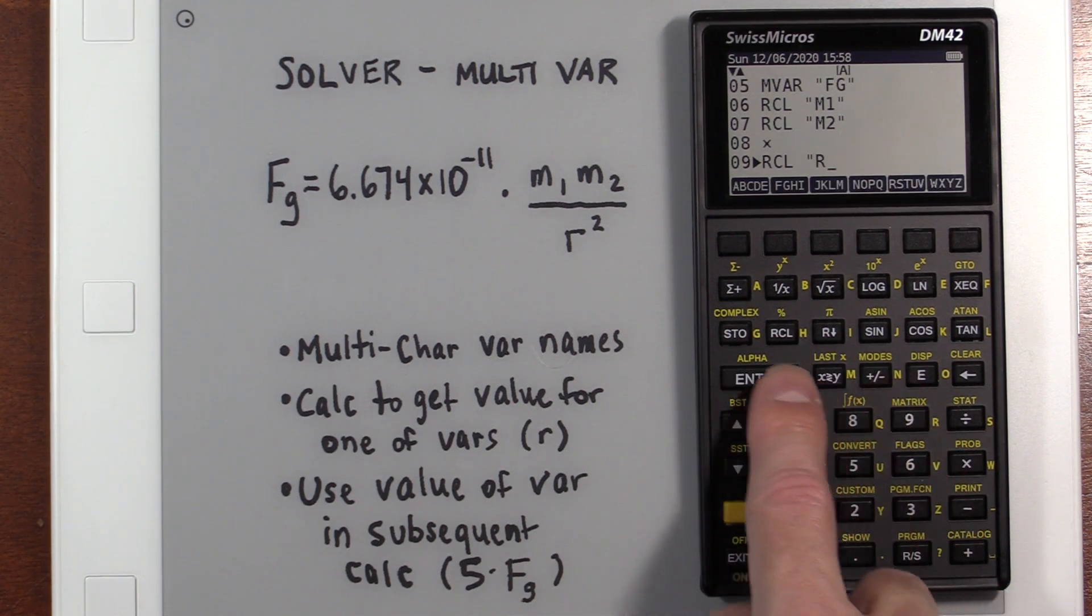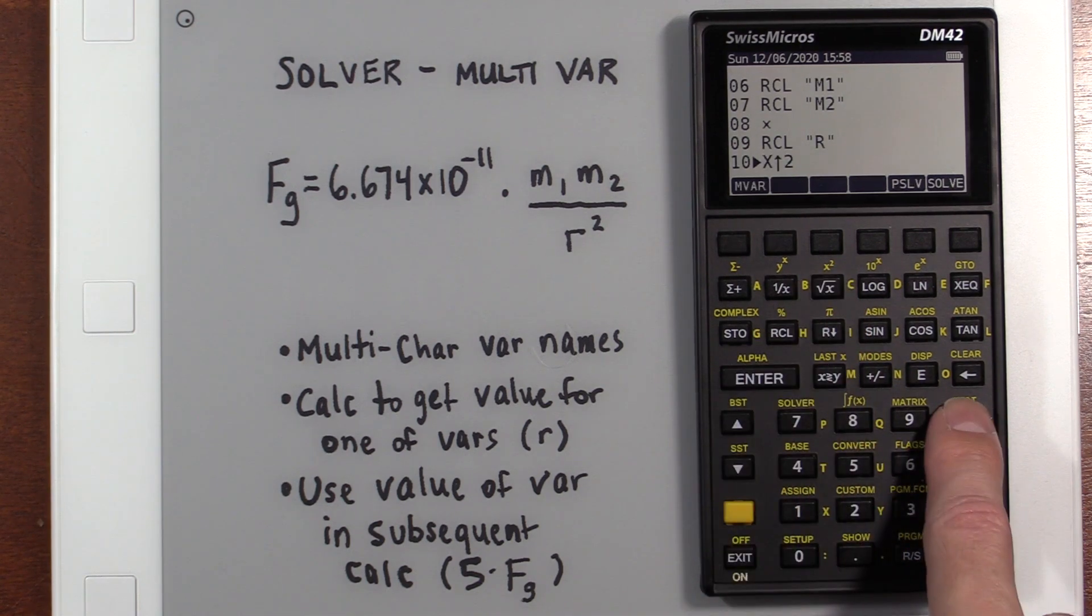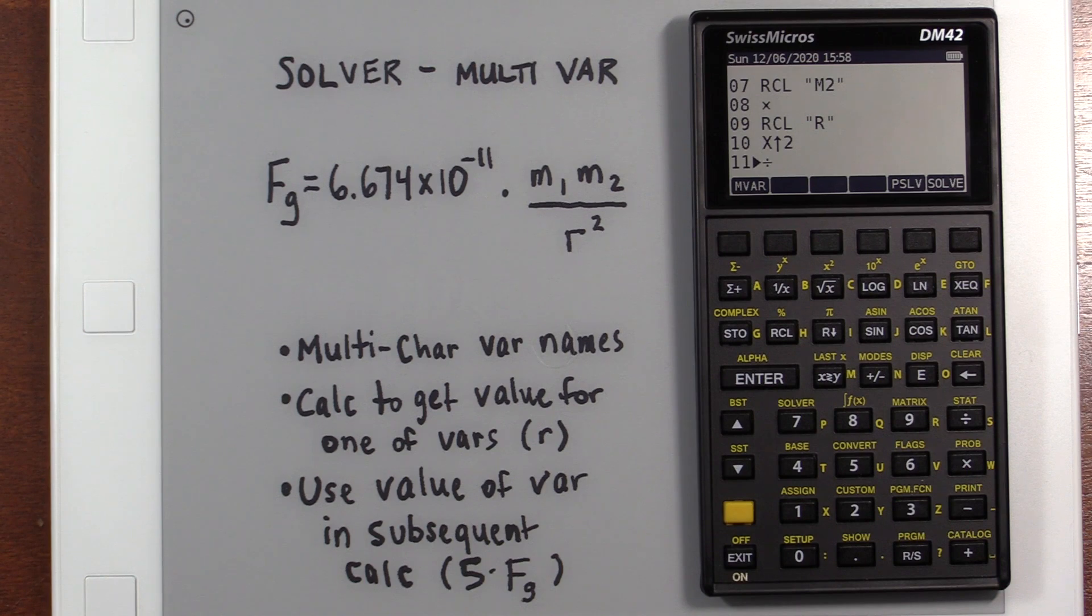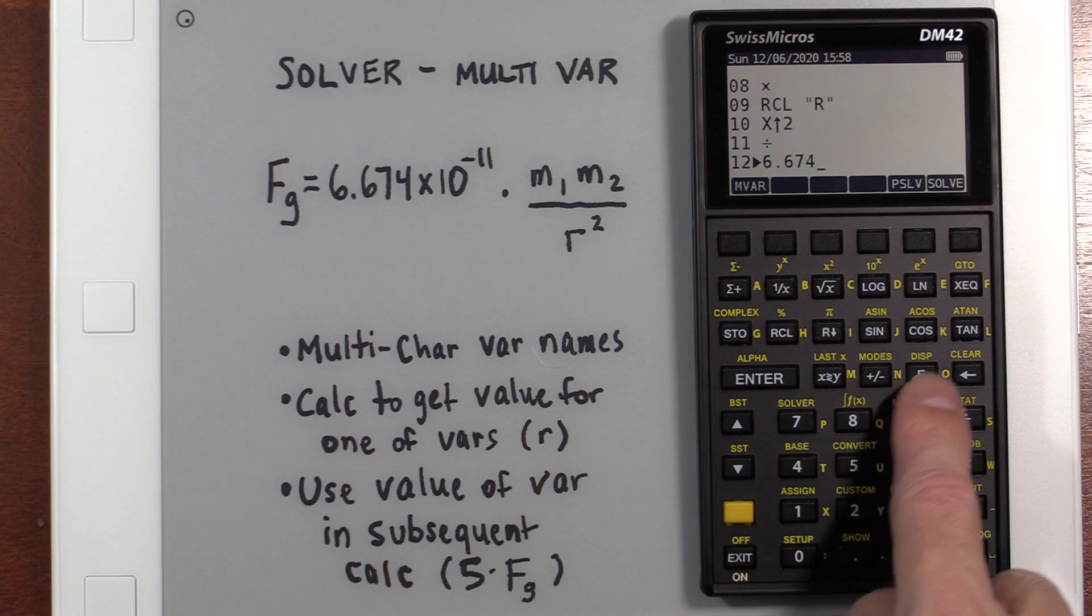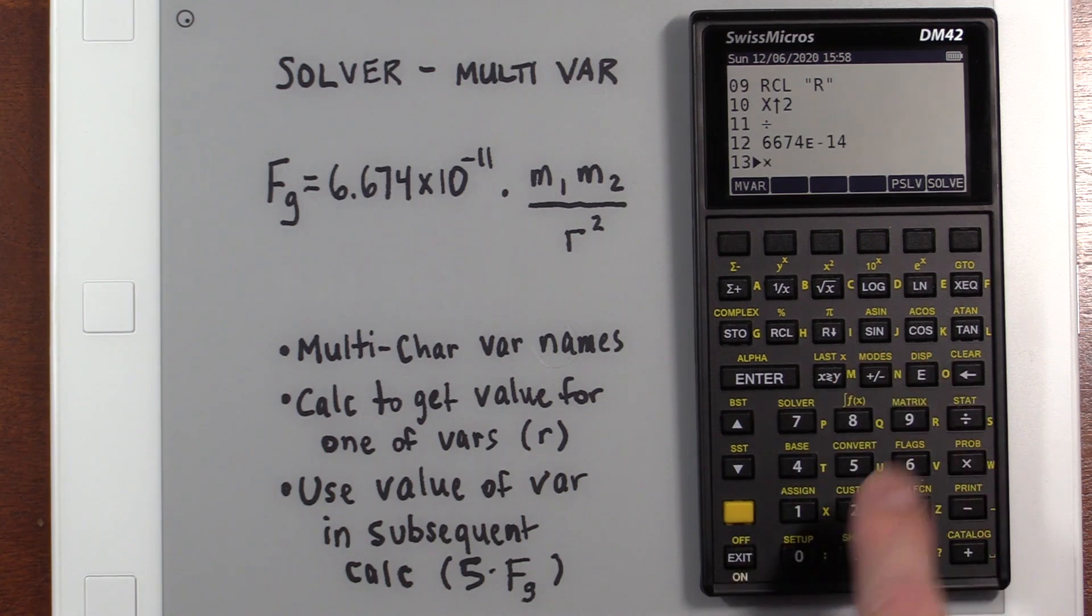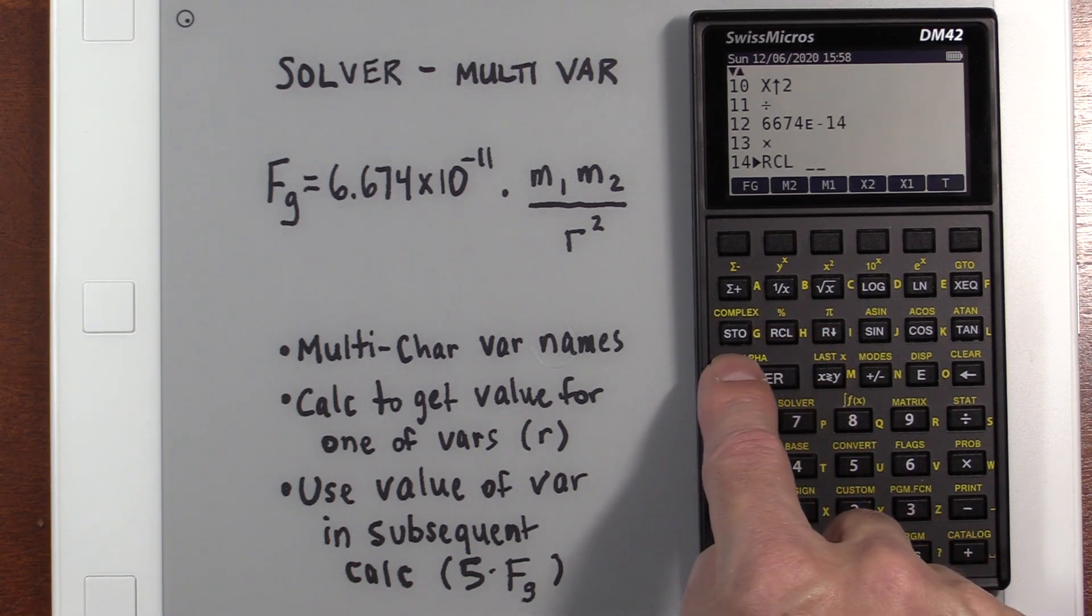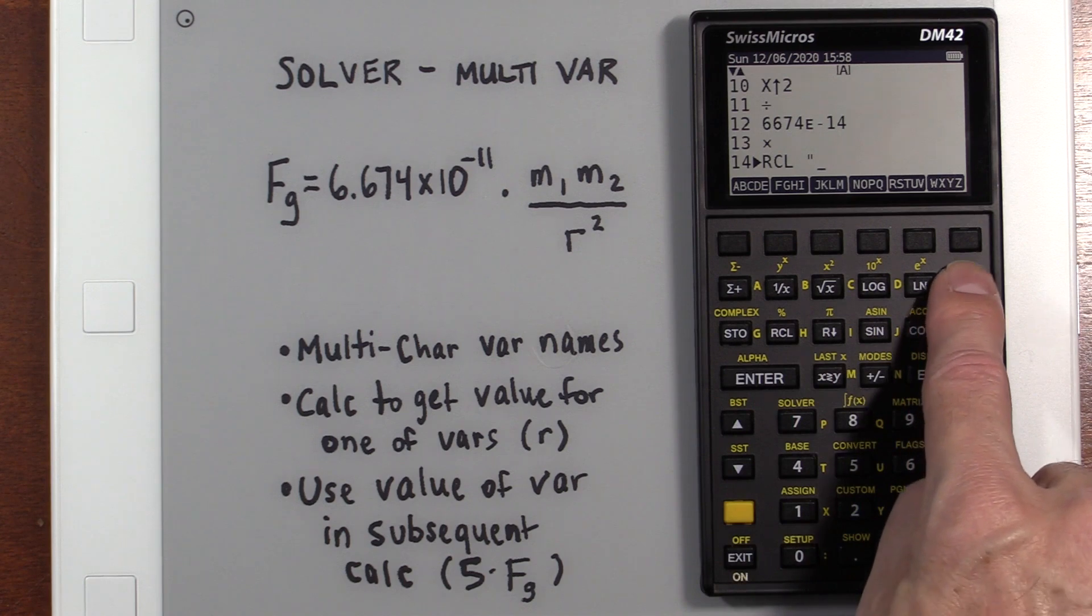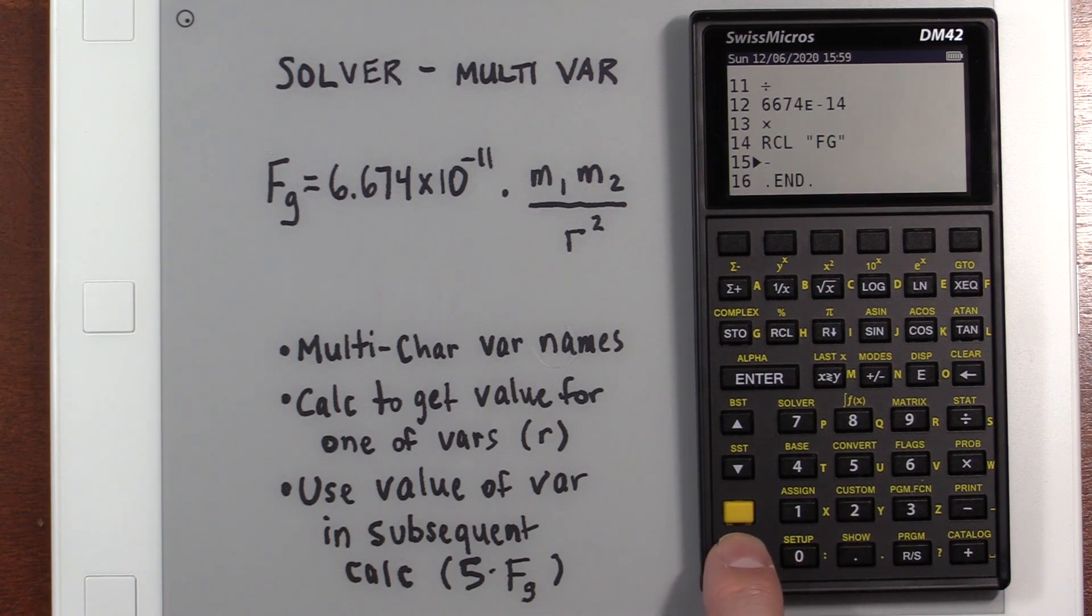And we're going to then recall our M2. Oops. I keep doing that. Multiply them together. So we've done this numerator. Now we've got to recall R. And we're going to square it. And we're going to divide. So we've taken care of this. We've got to multiply all that by this 6.674 times 10 to the negative 11. And finally, we've got to subtract our FG. So we're going to recall that FG and subtract it. All right. We've got all that put in. And we can exit now.